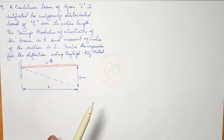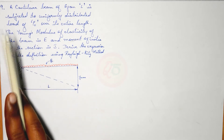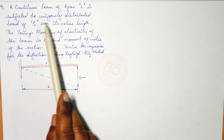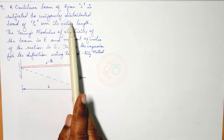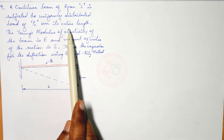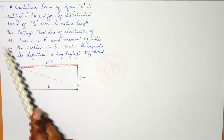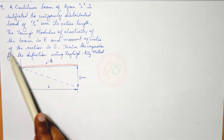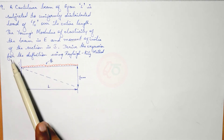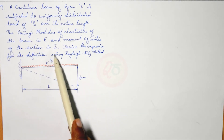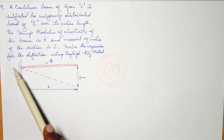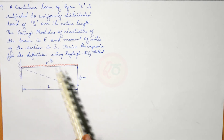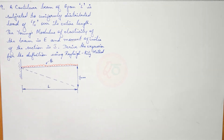The problem statement: a cantilever beam of span L is subjected to a uniformly distributed load of P0 over its entire length. The Young's modulus of elasticity of the beam is E and the moment of inertia of the section is I. Derive the expression for the deflection using the Rayleigh-Ritz method.